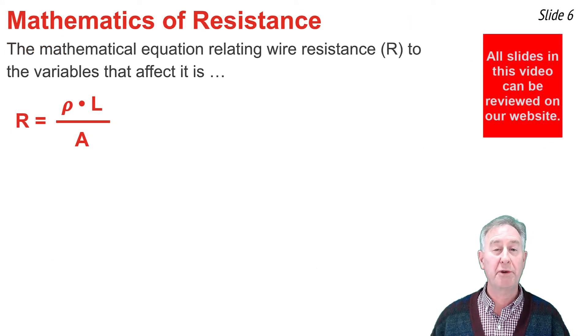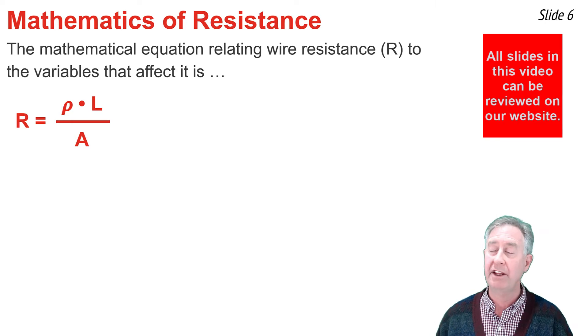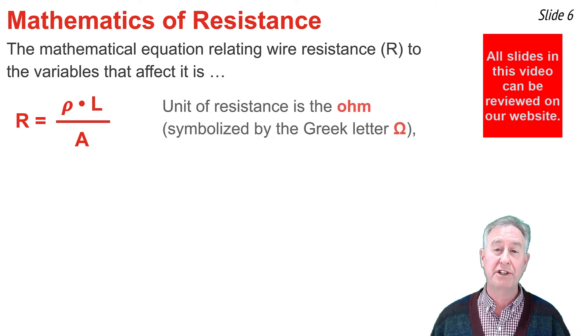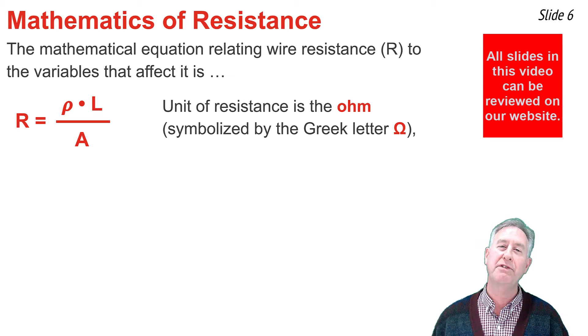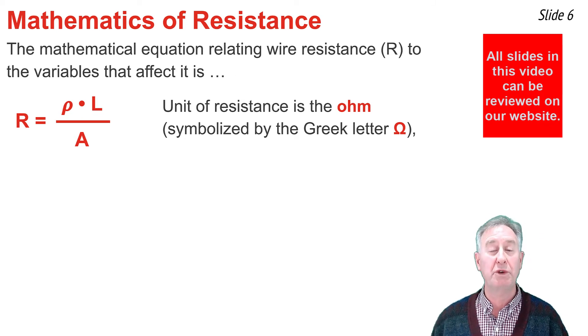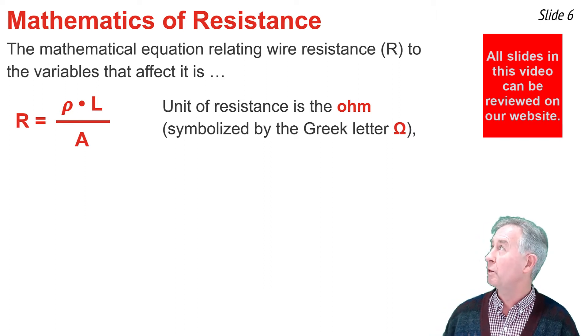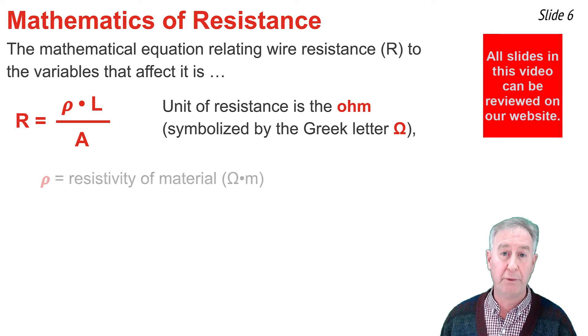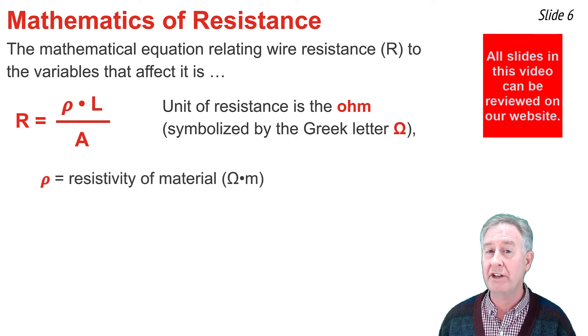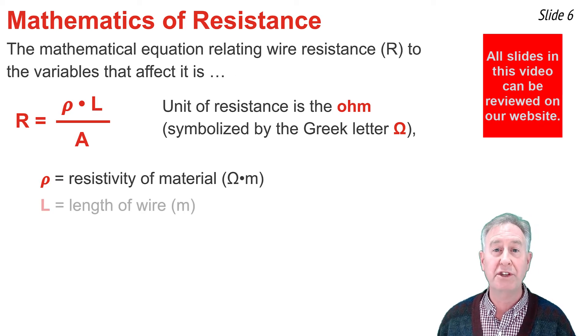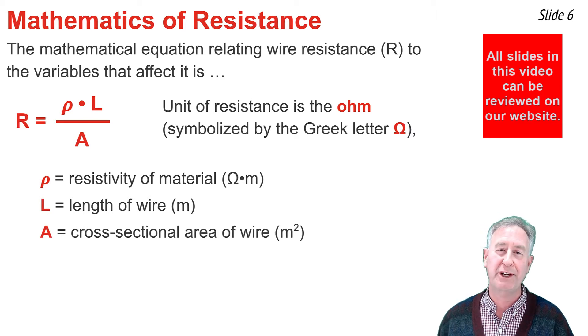The mathematical equation that relates the resistance R of a wire to the variables that affect it is given here. The unit for resistance is the ohm, named after physicist George Ohm. The symbol we use to represent the unit ohm is the Greek letter omega shown here. In the equation for resistance, the first variable on the right-hand side is the resistivity. That's the symbol rho, a Greek letter. The symbol L represents the length of the wire, and the symbol A represents the cross-sectional area of a wire.